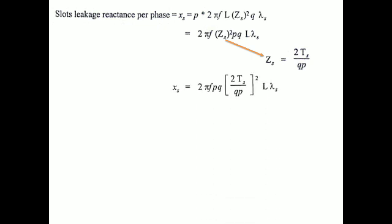After substituting, P·Q cancels from numerator but one P·Q remains in the denominator (squared term). The factor of 2 inside the bracket, when squared, gives 4; brought out of the square it contributes 8. The simplified stator slot leakage reactance equation becomes: X = 8π·F·T_s²·L·λ_s / (Q·P). This is the final simplified expression for the stator slot leakage reactance.